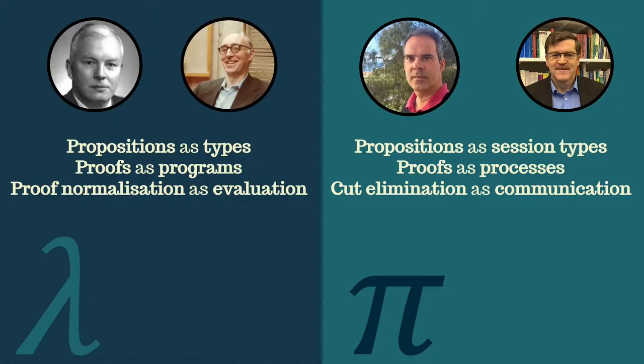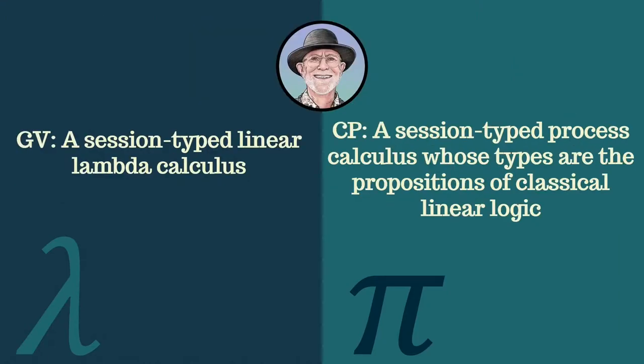The correspondence with logic means that the simply-typed lambda calculus is very well-behaved, enjoying properties such as strong normalization. In the 90s, a line of work started by Abramsky considered whether there's a similar correspondence for concurrent computation. A landmark paper by Caires and Pfenning in 2010 demonstrated a logical basis for a process calculus with session types, which type communication protocols. Here, propositions can be thought of as session types, proofs can be thought of as processes, and cut elimination can be thought of as communication.